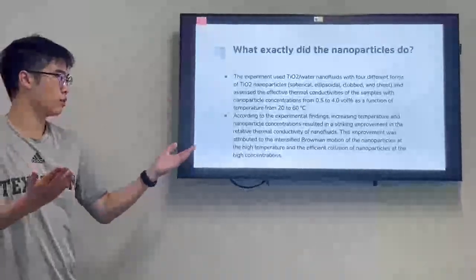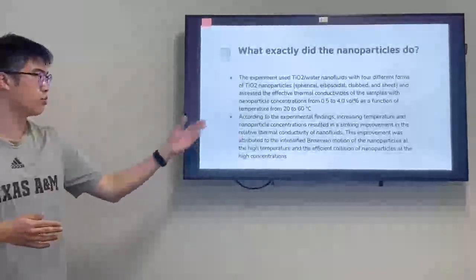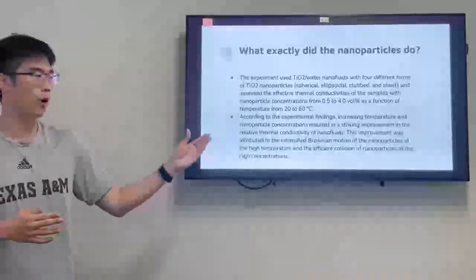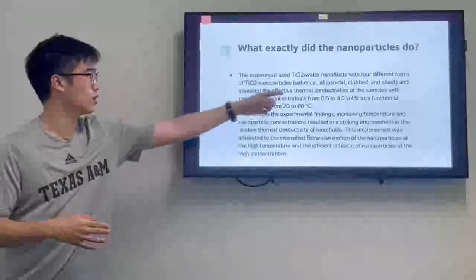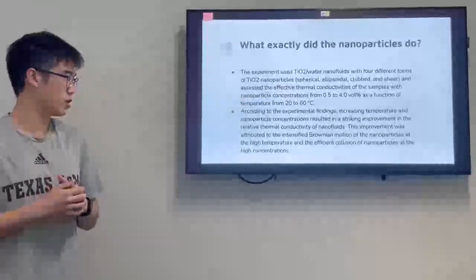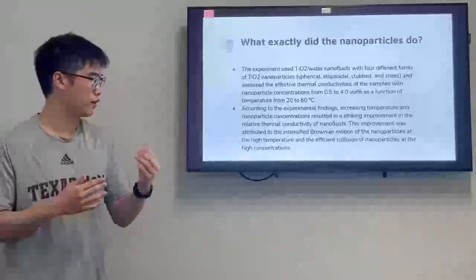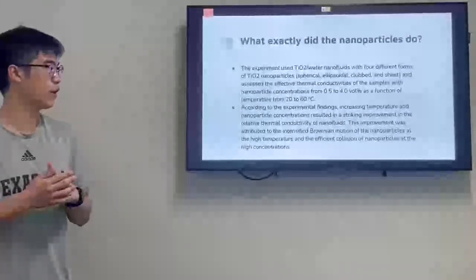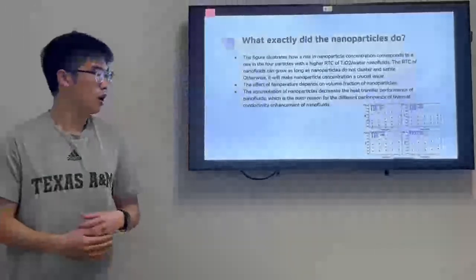This improvement, what happens with this improvement? It will intensify the Brownian motion. What is Brownian motion? Brownian motion is the random motion of particles, all the particles, and it is related to thermal conductivities. It will do that at high temperature and the efficient collision of nanoparticles at high concentration.